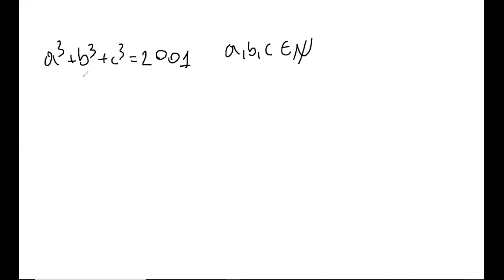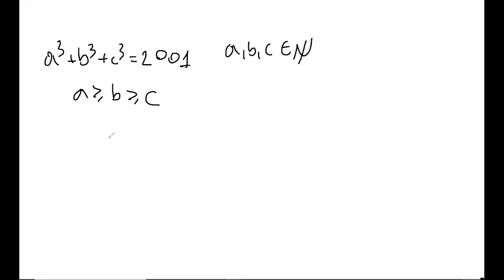Now this equation is completely symmetric in a, b, and c, so we can add an extra condition. This is generally useful in number theory, algebra, even sometimes combinatorics and geometry problems. We can assume that a ≥ b ≥ c without any loss of generality, because if (a, b, c) is a solution, then so is (b, c, a), (c, a, b), and any other permutation you can think of.